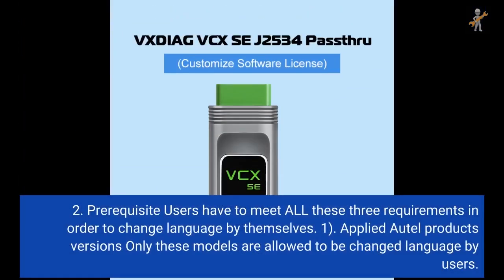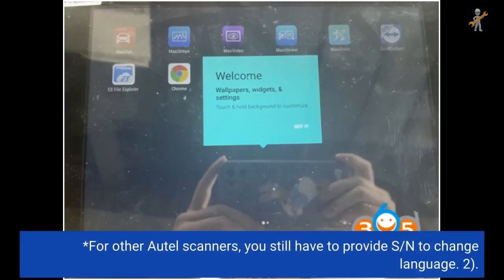Prerequisite: users have to meet all three requirements in order to change the language by themselves. First, applied Autel product versions — only these models are allowed to have the language changed by users. For other Autel scanners, you still have to provide your serial number to change the language.